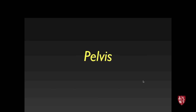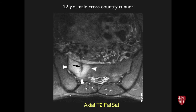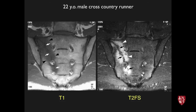We'll work our way down through the body, starting at the pelvis. Sacral stress fracture in a 22-year-old male: right sacral ala with marrow edema, low signal fracture line, and periosteal reaction. On oblique coronals, the T1s show the edema as low signal with a low signal fracture line. The T2s are somewhat more conspicuous because of fat suppression and contrast, showing marrow edema with the fracture line centered within the edema.